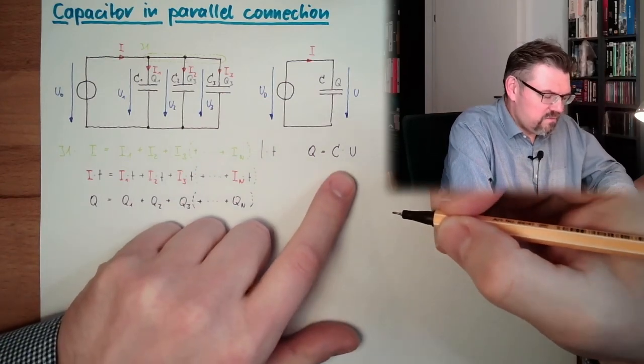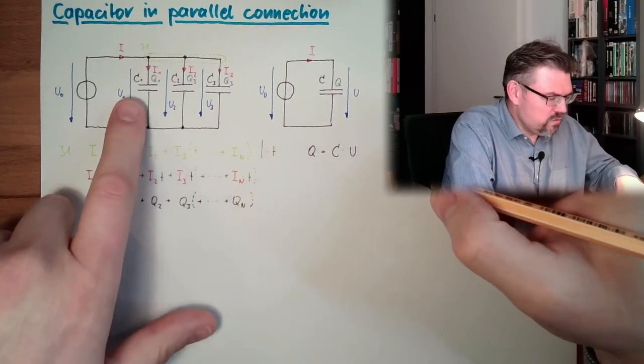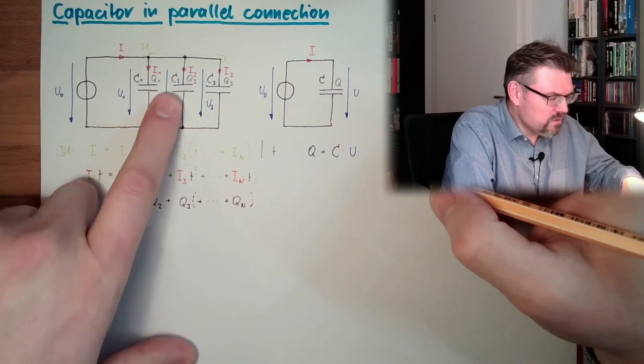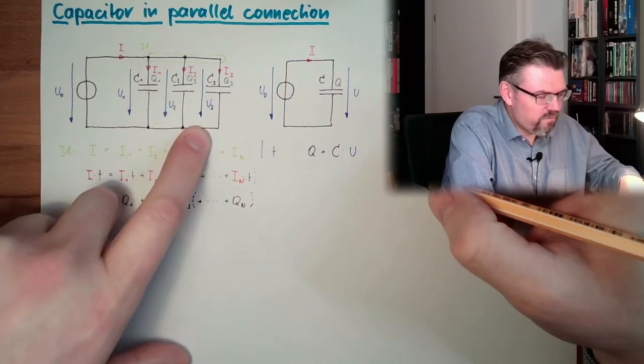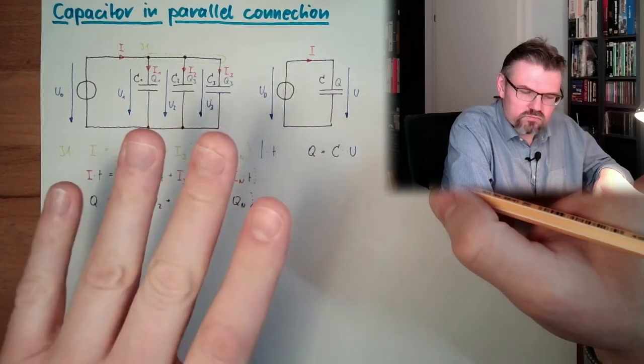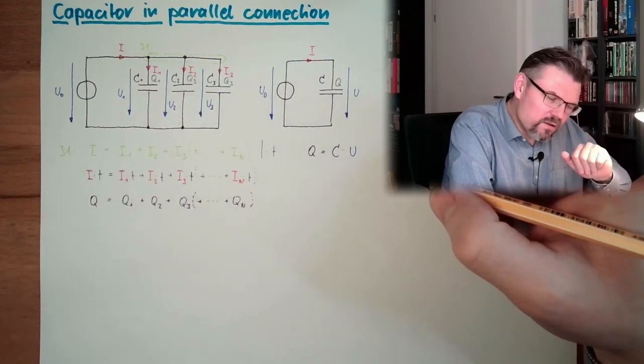And of course, we do have still the situation or the relationship q equals capacity multiplied by voltage. And now, this is true C1 multiplied by U1, C2 multiplied by U2, C3 multiplied by U3, and Cn multiplied by Un. Now, let's think about what this is.